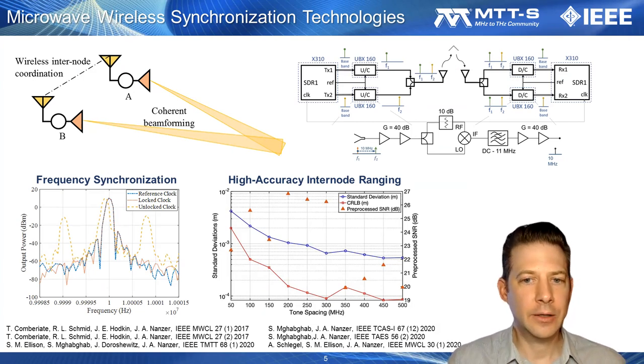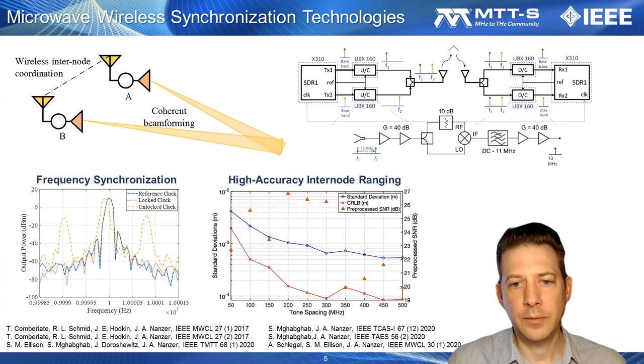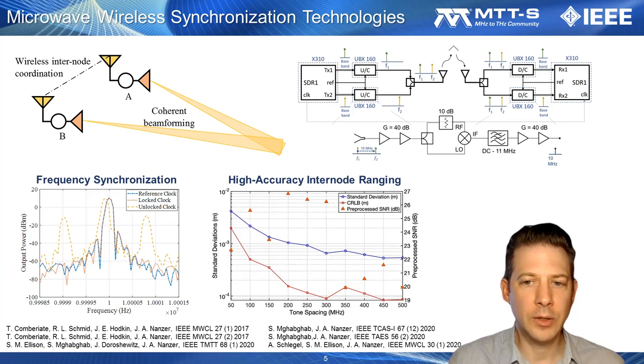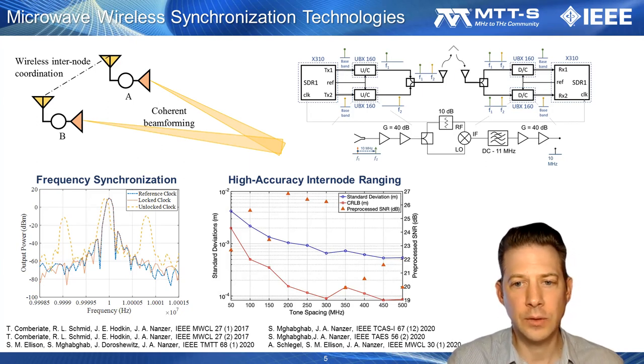These include high accuracy inter-node ranging systems that can obtain sub-millimeter ranging accuracy using spectrally sparse waveforms, along with wireless frequency synchronization circuits. One of the unique aspects of coordination of distributed arrays is that it is a cooperative operation, so the nodes can actively retransmit signals with high gain and with information modulated onto the waveforms. I'll discuss how to leverage these aspects to achieve simultaneous frequency synchronization and high accuracy ranging, and how these can be directly implemented in microwave hardware or in software-defined radio.